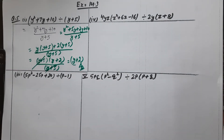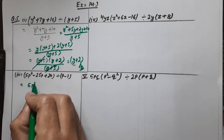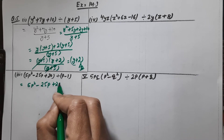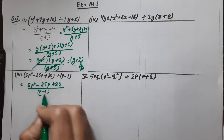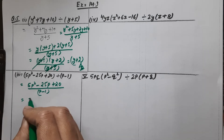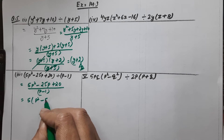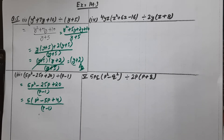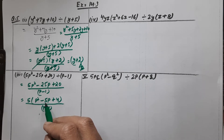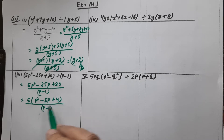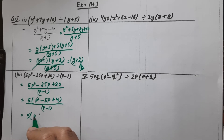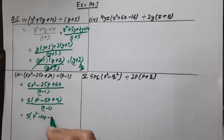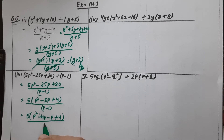Now we are doing the third part, which is also very easy: 5p squared minus 25p plus 20 divided by (p minus 1). First, take 5 common from the numerator to get 5 times (p squared minus 5p plus 4) over (p minus 1). Splitting the middle term: we need factors that add to minus 5 and multiply to 4, which gives minus 4 and minus 1. So we get 5 into (p squared minus 4p minus p plus 4) divided by (p minus 1).